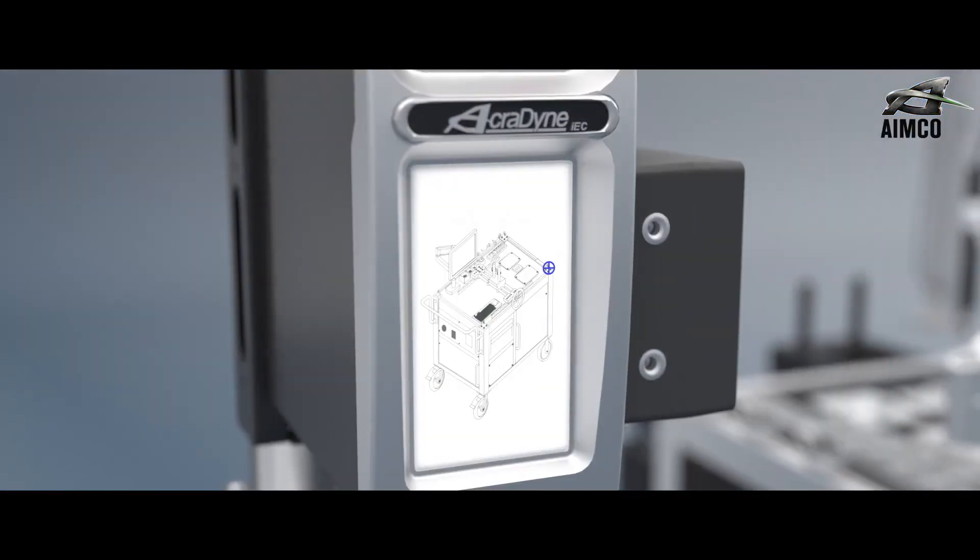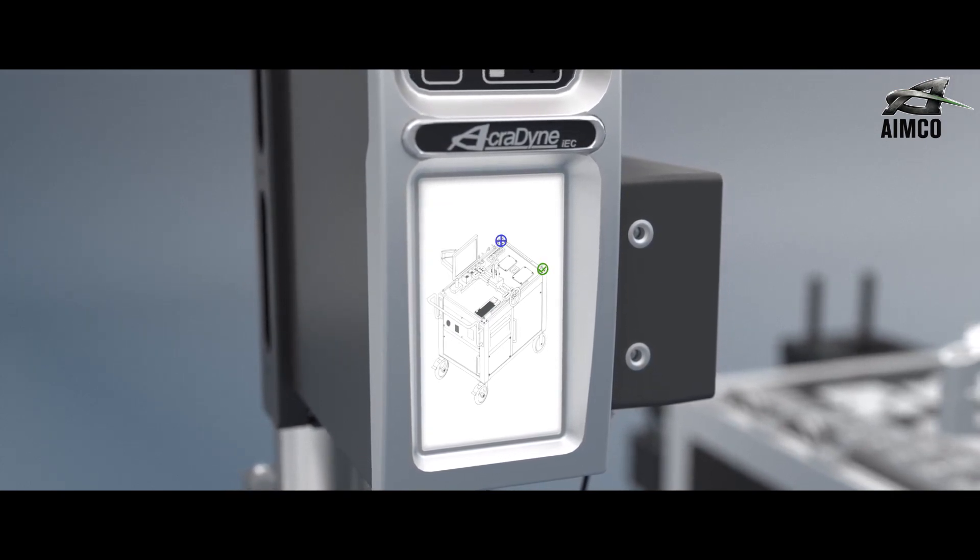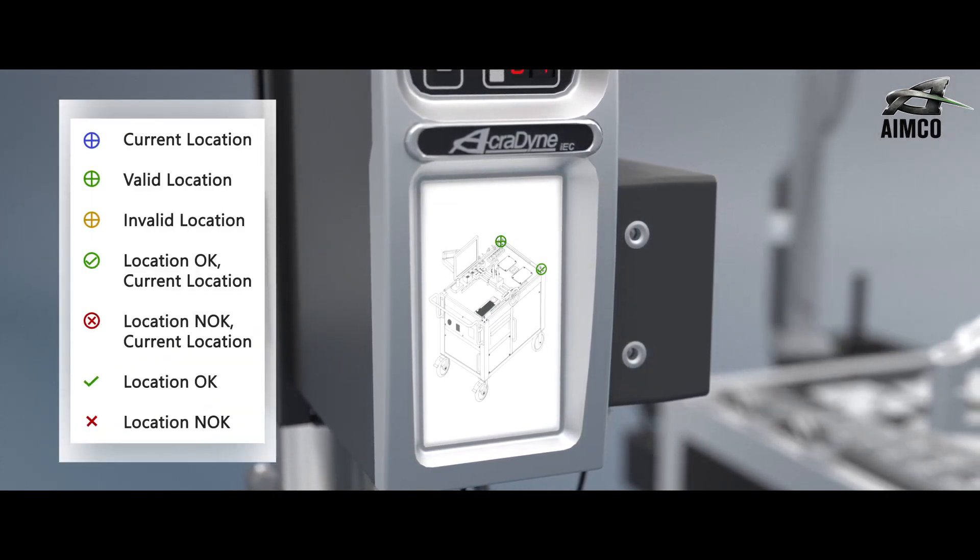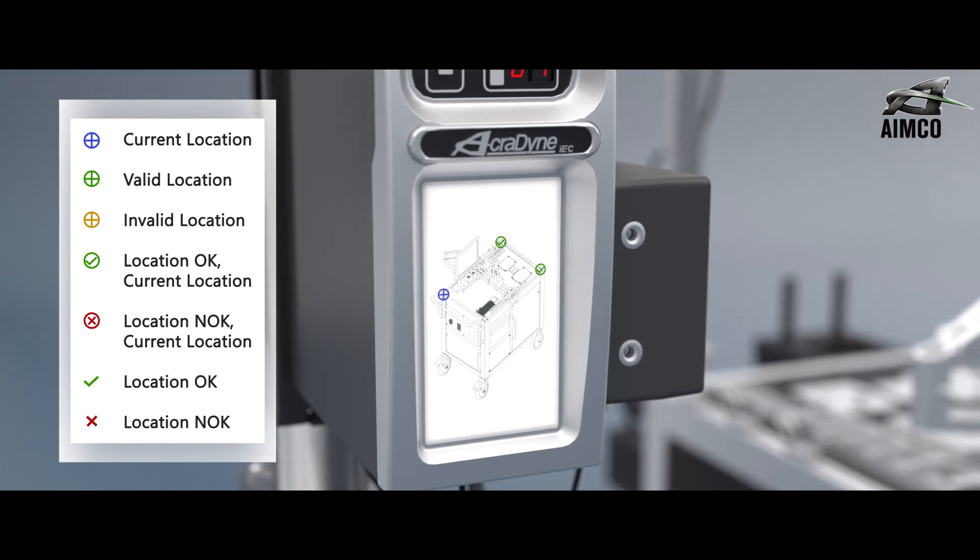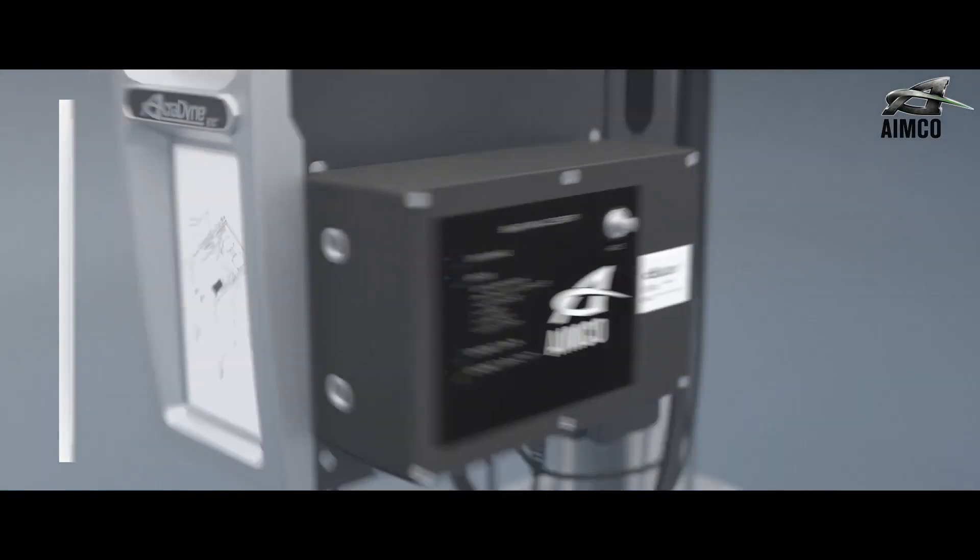The controller can be configured to show an exact application image on the built-in run screen. Easy-to-follow icons guide the operator through the process when fastening has been completed, which fastener to run next, and if the fastener was not tightened correctly.